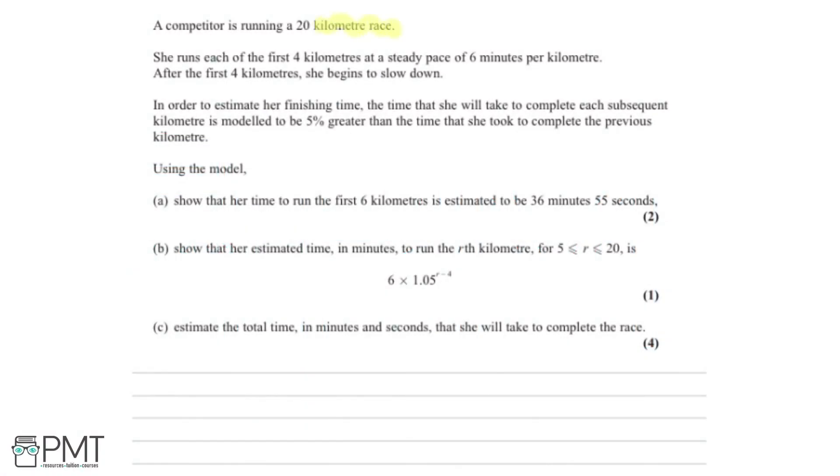A competitor is running a 20 kilometer race. She runs each of the first 4 kilometers at a steady pace of 6 minutes per kilometer, and after the first 4 kilometers she begins to slow down. In order to estimate her finishing time, the time that she will take to complete each subsequent kilometer is modeled to be 5% greater than the time she took to complete the previous kilometer.